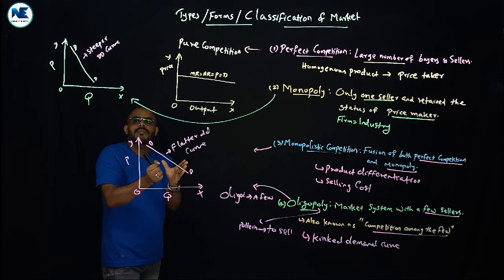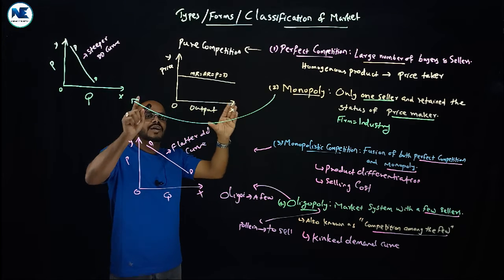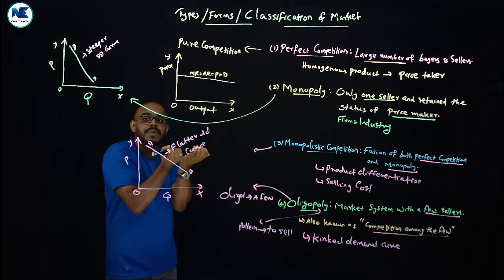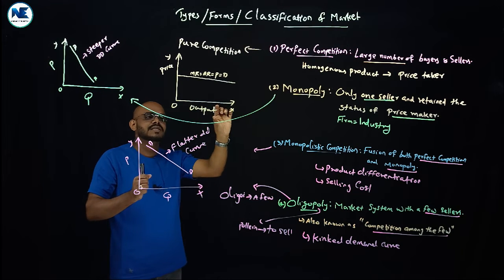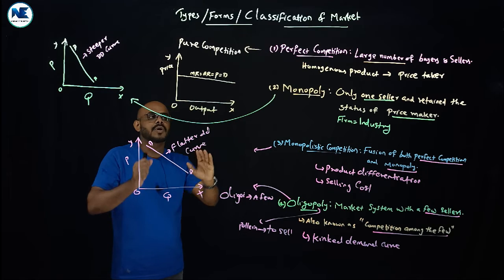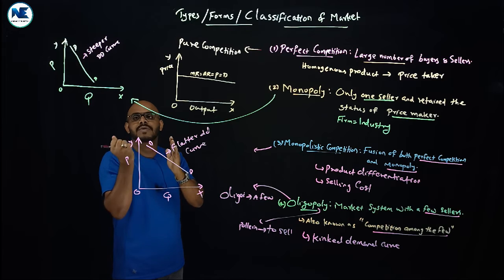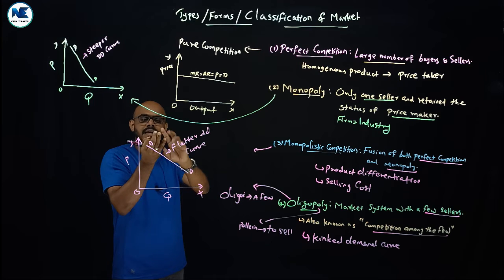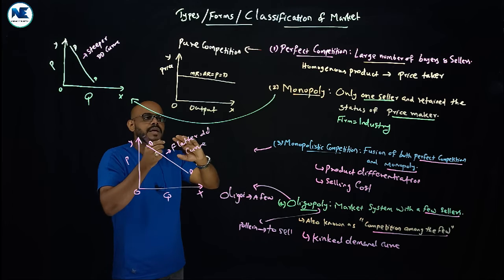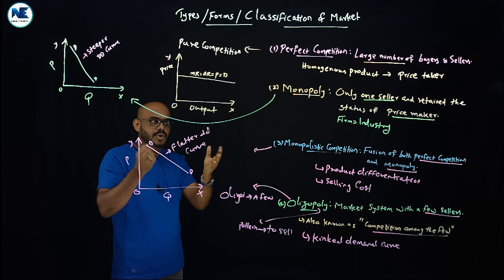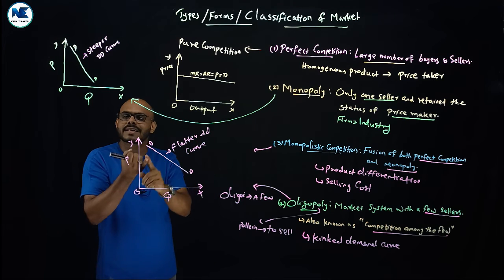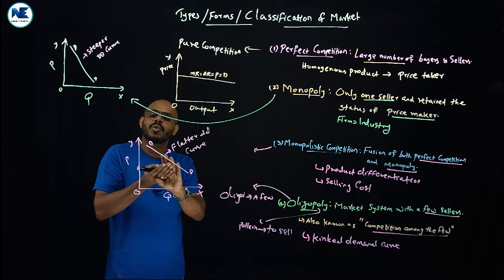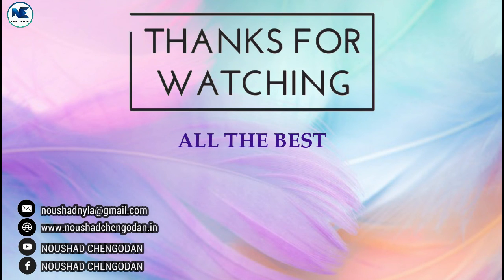So that is the oligopoly market — competition among the few. In microeconomics, these are the four major market forms. For five or six mark questions, you need to know perfect competition, monopoly, monopolistic competition, and oligopoly, along with the basis of classification: number of buyers, number of sellers, nature of the product, entry or exit freedom, and knowledge about market conditions. In the coming video we will discuss bilateral monopoly, monopsony, duopsony, and oligopsony. Have a nice day, thank you.